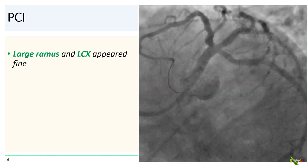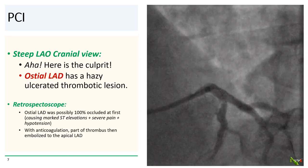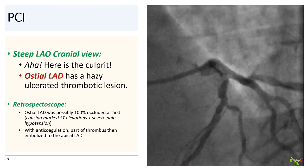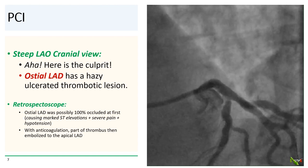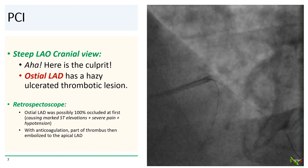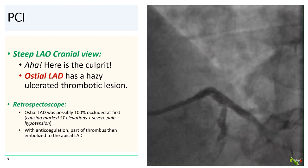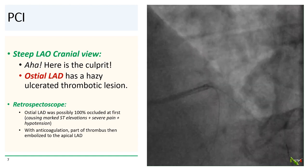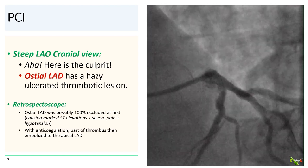His ST elevations had not changed and he was still clearly in severe pain and hypotensive. So is there something else going on? We took a spider view and both the large ramus and the circ seemed fine. It wasn't until we took a very steep heliocranial view that we found the real culprit. There was a hazy, ulcerated thrombotic lesion at the ostium of the LAD. So in retrospect, the LAD could have been 100% occluded at first, causing the marked ST elevation, severe pain, and hypotension — and part of the thrombus could have then embolized to the apical LAD, causing the embolic occlusion that we had just aspirated.